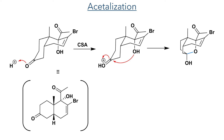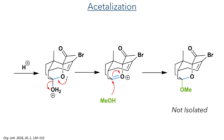Taking this forward, the authors performed an acetalization reaction to form the distinctive acetal which makes up the framework of the target compound. They used CSA as the acid catalyst, which protonated the carbonyl group allowing for the attack of the tertiary hydroxyl group to form the hemiacetal intermediate. Further protonation and elimination of water produces an electrophilic intermediate where methanol, used as solvent, attacks to form the acetal. This compound was not isolated and was instead brought forward to the next step, which was a bromination.